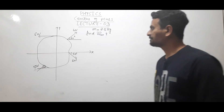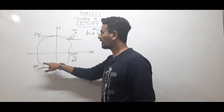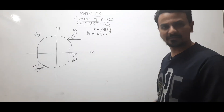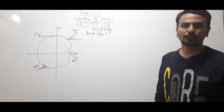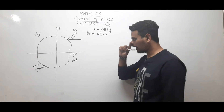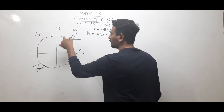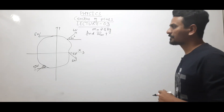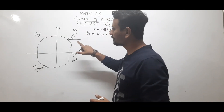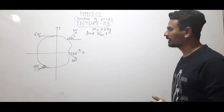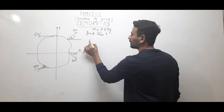Let us solve one more question. There is a body of mass 2.5 kg and various forces are acting on it as shown in the figure. You have to find the acceleration of center of mass. Since acceleration is a vector quantity, we need both magnitude and direction. This is a solved example from HC Verma. We'll use vector concepts — resolving all forces in x and y directions, then adding x components and y components separately.